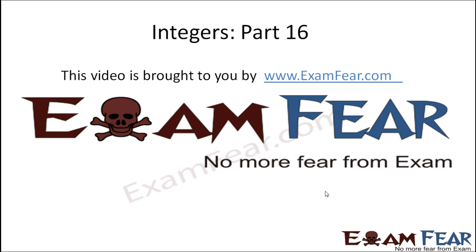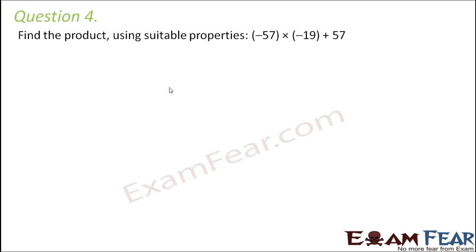Hello friends, this video on integers part 16 is brought to you by examfear.com — no more fear from exam. Question number 4: find the product using suitable properties: minus 57 into minus 19 plus 57.